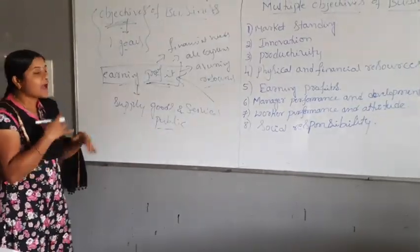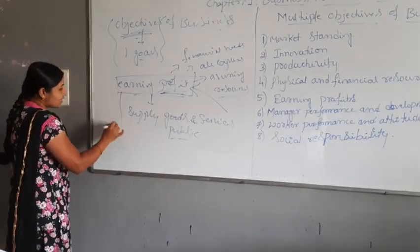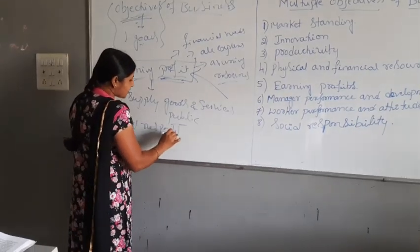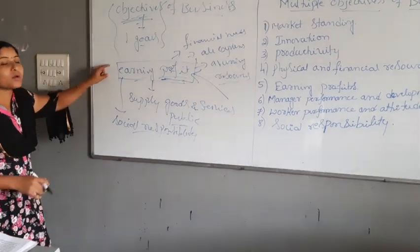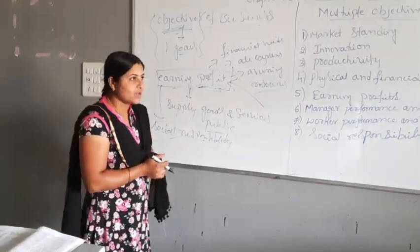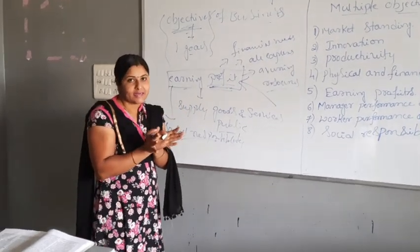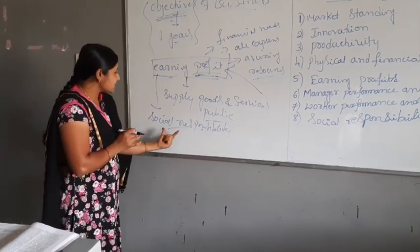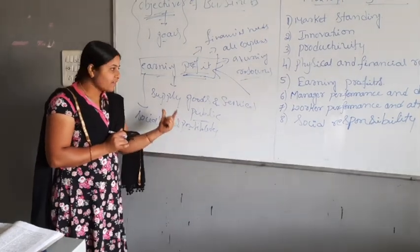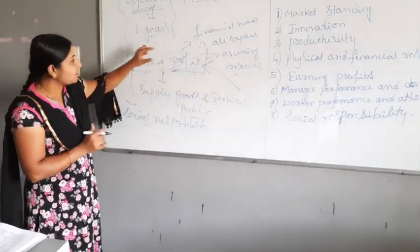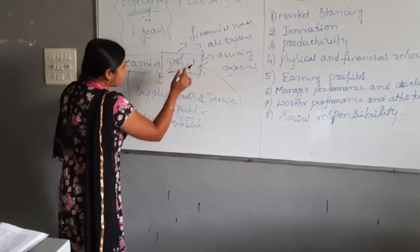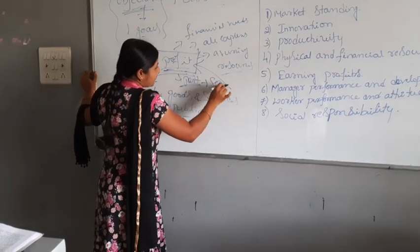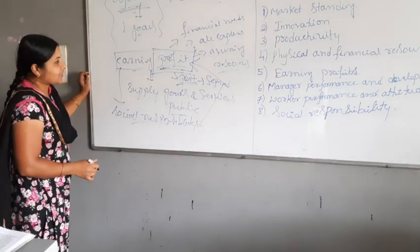Business has also another objective — connecting certain social responsibility activities. Business is one part of society and completely depends upon the society. That's why every business provides certain social responsibility activities. If any business is not only earning profit, some part of the profit is spent for the purpose of conducting social responsibility activities.